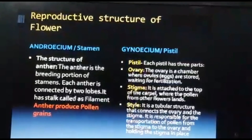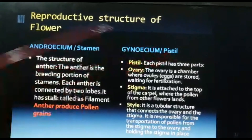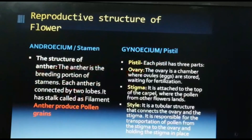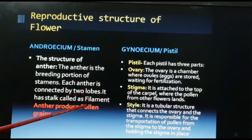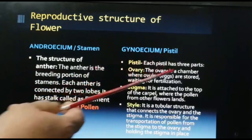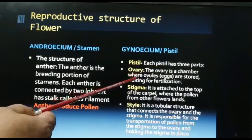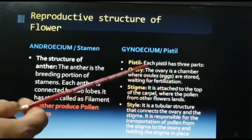The reproductive structures of the flower are the androecium and the gynoecium, or the stamen, carpel, or pistil. The anther is the pollen-bearing portion of the stamen, and each anther is connected by two lobes with a stalk called the filament, and the anther produces pollen grains. The pistil has a typical ovary, a style, and the stigma.